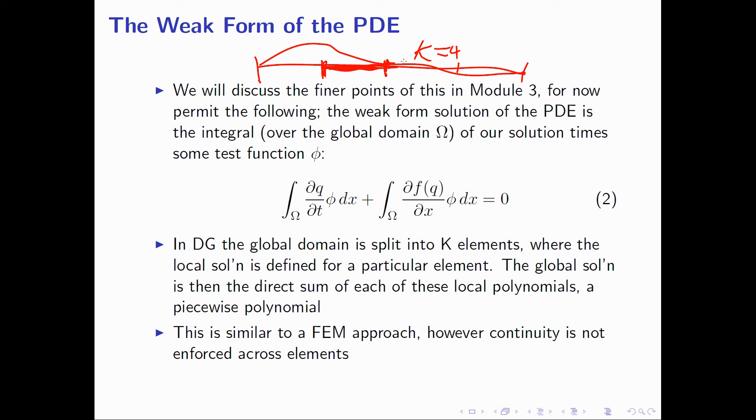The global solution we recover from DG is a combination of each of these local polynomials. In comparison to the finite element approach, however, we don't necessarily require continuity between the local solution approximations between elements. As an example, imagine these are two elements here. We could have some sort of local solution here and some sort of local solution here with this discontinuity between them.